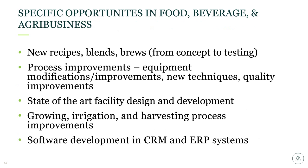Specific to food, beverage, and agribusiness, R&D activities include new recipes, blends, and brews; developing or farming new strains of crops; process improvements from growers to food packers to food processors for finished consumer products; development of equipment, state-of-the-art facilities, and growing, irrigation, and harvesting processes. With increasing automation, we're also seeing development of software programs for CRM and ERP systems, and control programs for equipment.